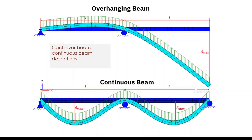Let us discuss a few examples. You can see here a cantilever beam — here we have a support. Since it bends like this, the tension is at the top and the compression is at the bottom. Throughout the section, the top is in tension, so we have to provide reinforcement where we have the tension. In other areas, we may provide nominal or minimum reinforcement.